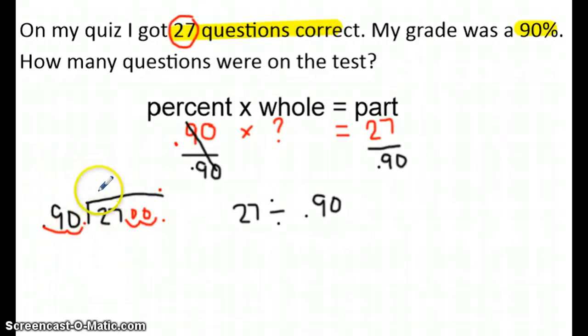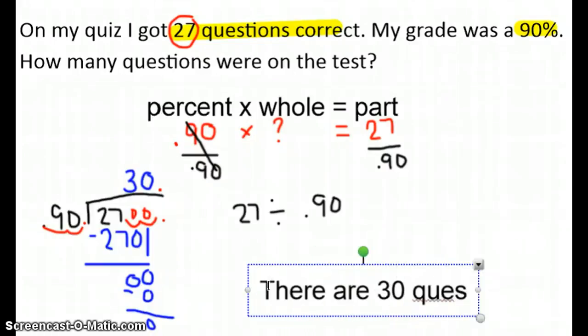So we say, can 90 go into 2? No. Can 90 go into 27? No. Can 90 go into 270? Yes. The answer is 3 times. 3 times 90 is 270. 270 subtracted from 270 is 0. Bring down that 0. And 90 into 0 is 0. 0 times 90 is 0. Subtract. And the problem is over. So as you can see, the answer to this is there are 30 questions on the test.